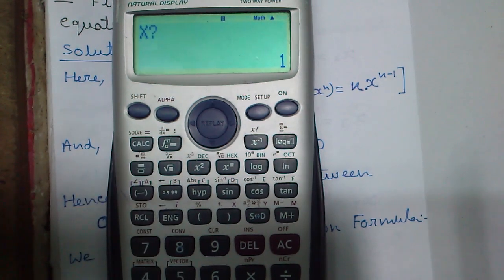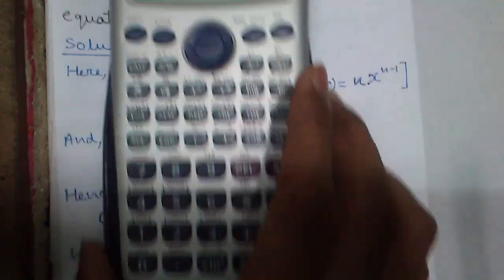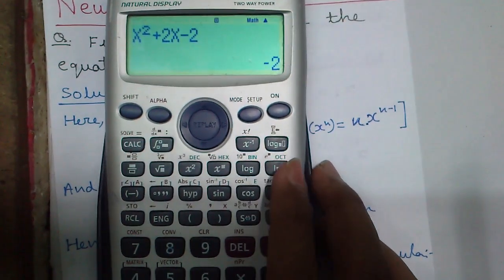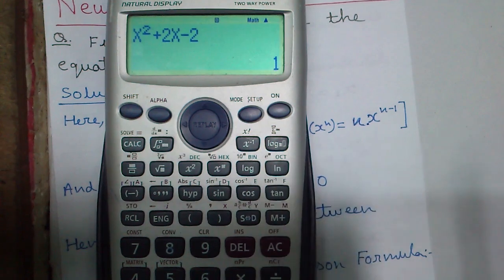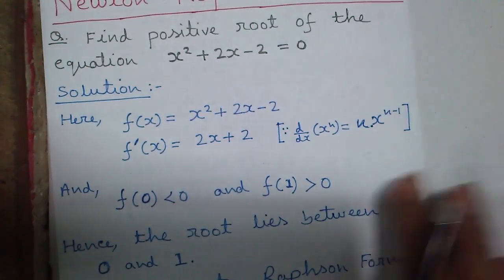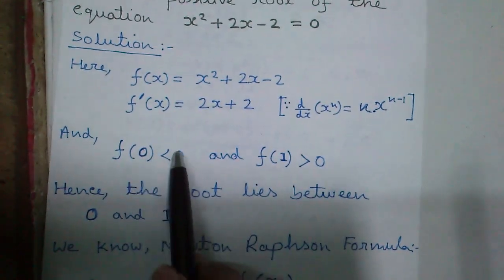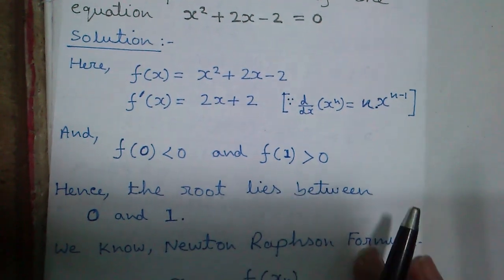Now press calc and x equals 0 and equals. So we get minus 2. Again x equals 1 we get plus 1. So we can say f(0) less than 0 and f(1) greater than 0. Hence the root lies between 0 and 1.